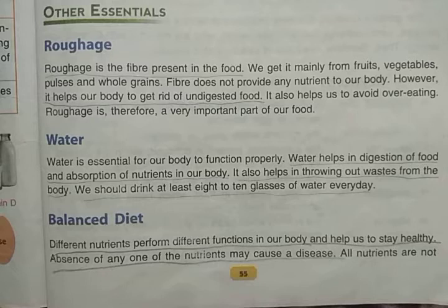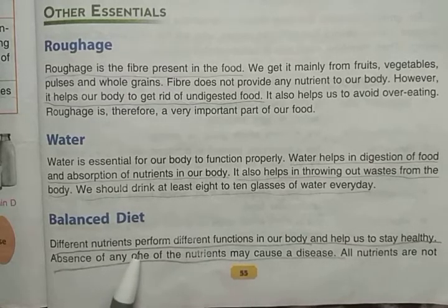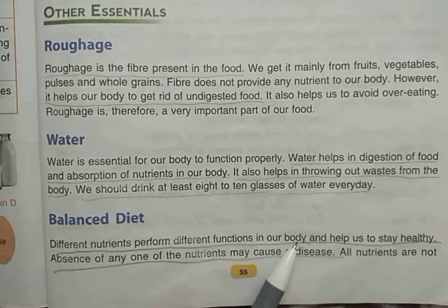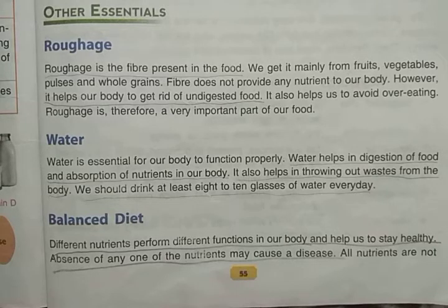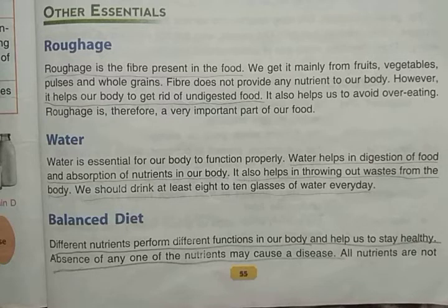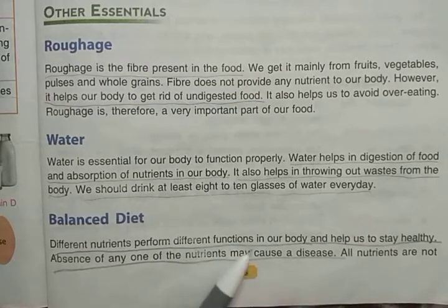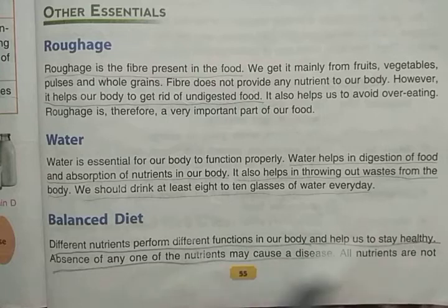Different nutrients perform different functions in our body. We have already learned the functions of different types of nutrients. Carbohydrates and fats give us energy. Proteins help us to grow — that is the body-building nutrient. And vitamins and minerals protect us from diseases.